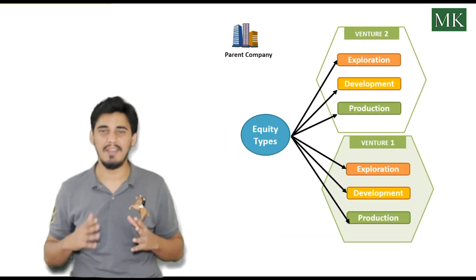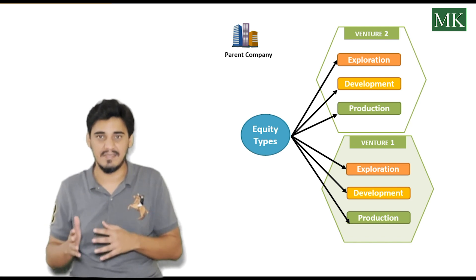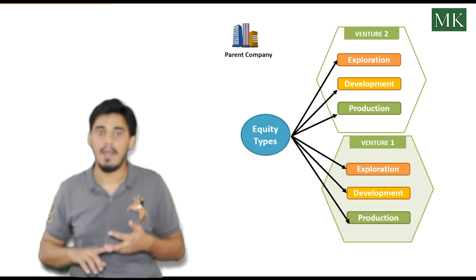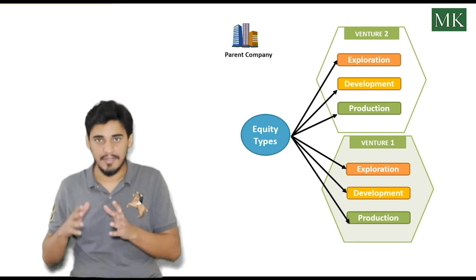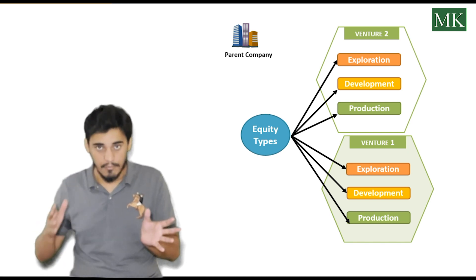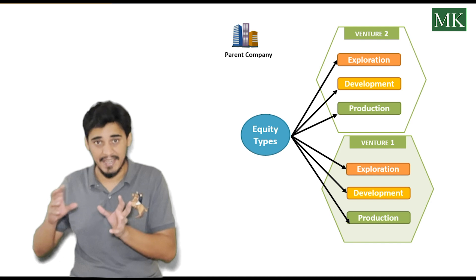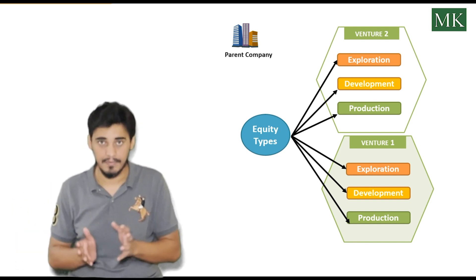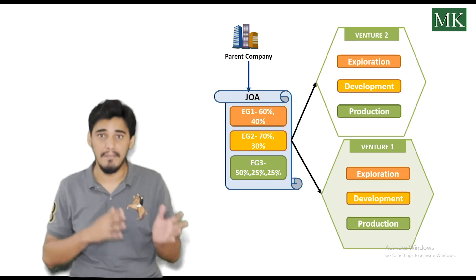In SAP Joint Venture Accounting, to record expenses and revenue against the concession for different phases like exploration, development, and production, we create the joint venture master data for the concession. Under this, we assign equity types for the different phases — which we create in customizing — and assign them into the joint venture master data. Whenever we create the joint venture master data, it should always be mapped or created against the joint operating agreement.